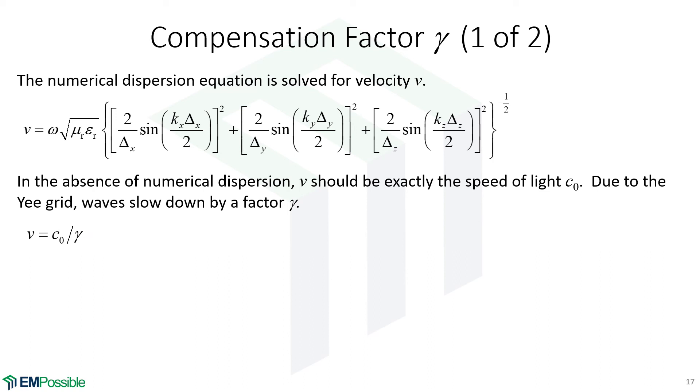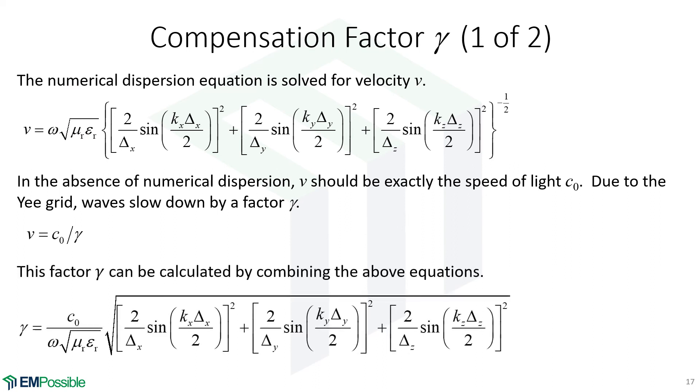From this, we can combine these two equations, take this expression for V and plug it in here, solve for gamma, and we have an equation now for calculating this compensation factor. We're calling it a compensation factor because we can use this to compensate for the numerical dispersion. This will become a number of something like 1.01 or 1.001, just slightly larger than 1, meaning we'll end up with a velocity just slightly smaller than the speed of light.